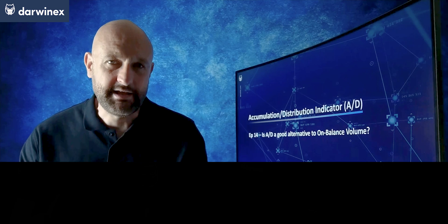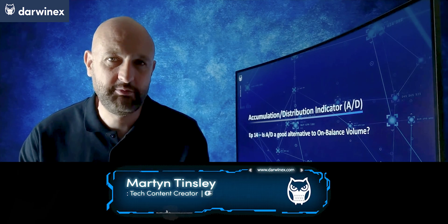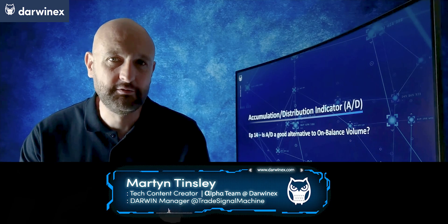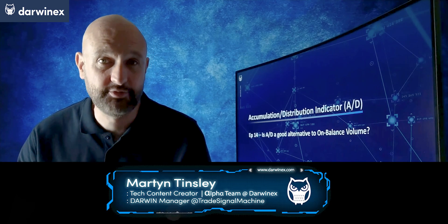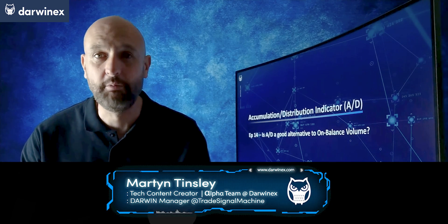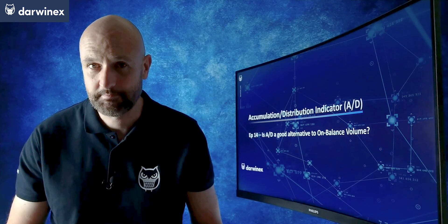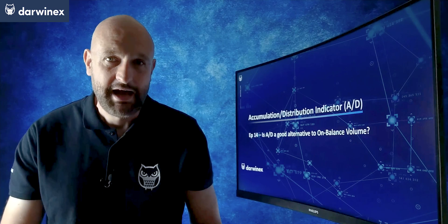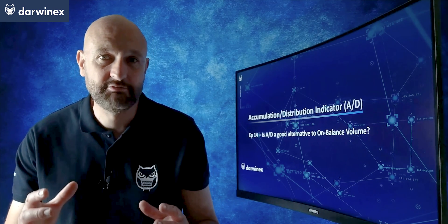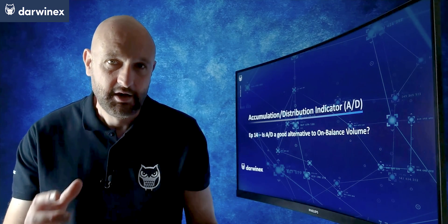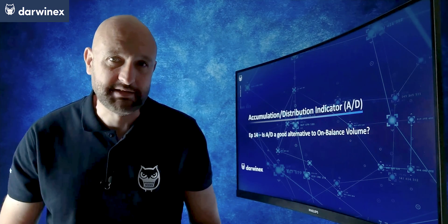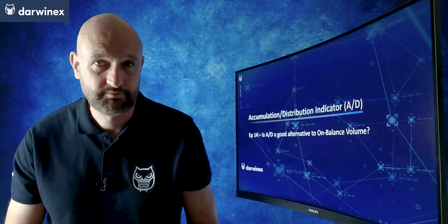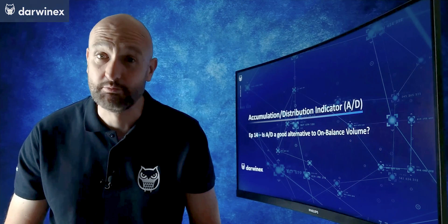Many would consider that the accumulation distribution indicator is an evolved and potentially improved version of the on-balance volume indicator. The reason for this lies in the calculation and the fact that it attempts to represent the reality of the volume data in a better way than on-balance volume does. Let's take a look at this in some more detail.